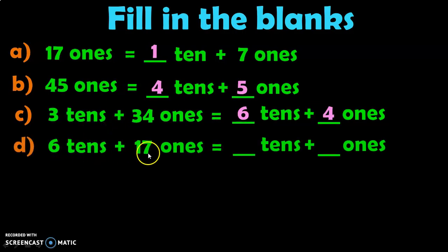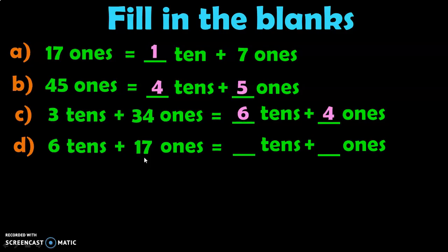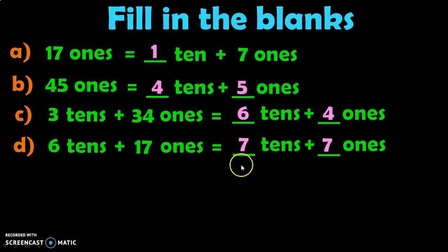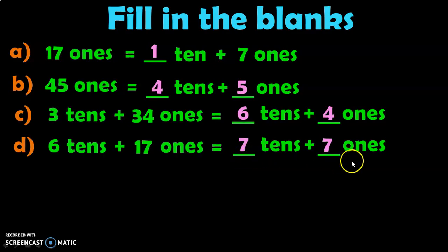Next: 6 Tens plus 17 Ones equals dash Tens plus dash Ones. Look at the Ones place — 17 Ones can be written as 1 Ten plus 7 Ones. So 7 is retained in the Ones place and the 1 Ten is carried forward to the 6 Tens. When you add it, you get 7 Tens. So the answer is 7 Tens plus 7 Ones, which makes 77. When regrouped, the correct answer is 7 Tens plus 7 Ones.